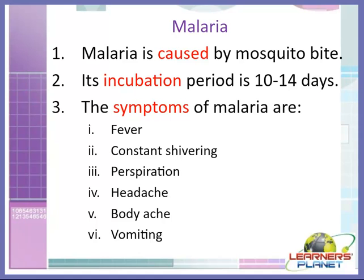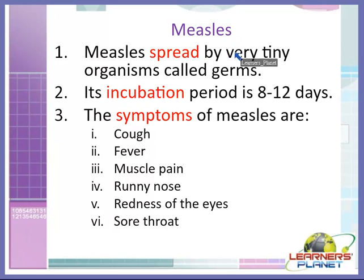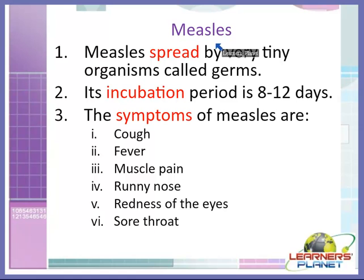Another communicable disease is measles. Measles spreads by very tiny organisms called germs. It is a communicable disease because when an infected person coughs or sneezes, these germs are released into the air and can infect a healthy person. Sharing an infected person's handkerchief, towel, or clothes also spreads these germs to a healthy person. Its incubation period is 8 to 12 days.